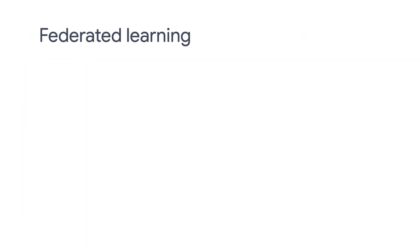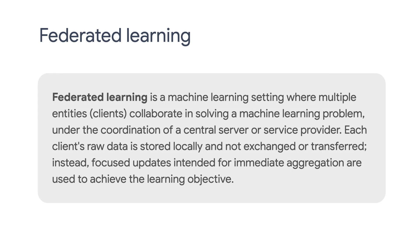Here's one definition of federated learning. Federated learning is a machine learning setting where multiple entities or clients collaborate in solving a machine learning problem under the coordination of a central server or service provider. Each client's raw data is stored locally and not exchanged or transferred. Instead, focused updates intended for immediate aggregations are used to achieve the learning objective. To put it another way, federated learning is a machine learning paradigm in which a shared global model is trained across many participating clients that keep their training data local. By keeping the sensitive raw data local, we can protect user privacy while still being able to train the model.